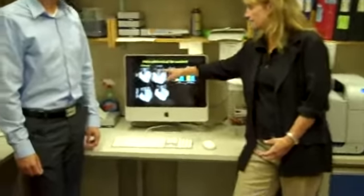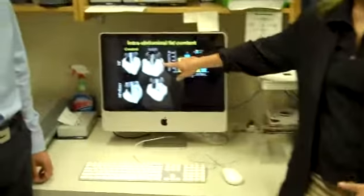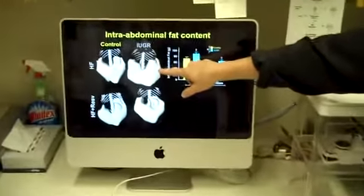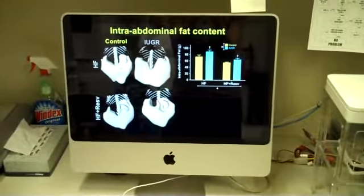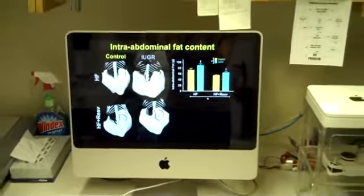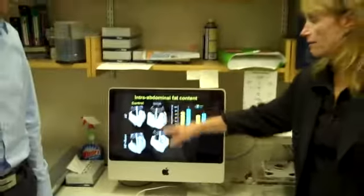And Dr. Davidge, what kind of findings did your research uncover regarding growth restriction? Well, we know with growth restriction, you increase the susceptibility to adult cardiovascular disease and diabetes. But what we found is that when the offspring that are born growth restricted are fed a high-fat diet, there's an increased deposition of fat to the abdomen. So abdominal fat is increased, and this will increase the susceptibility of these growth restricted offspring to type 2 diabetes.